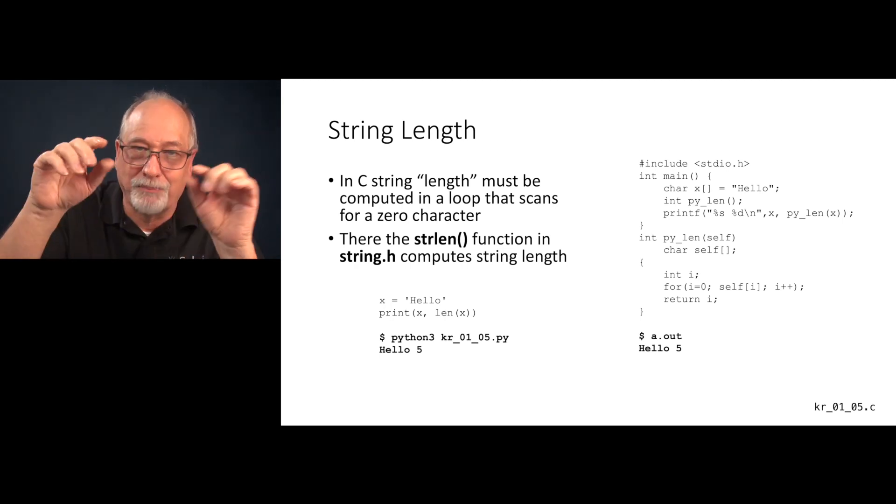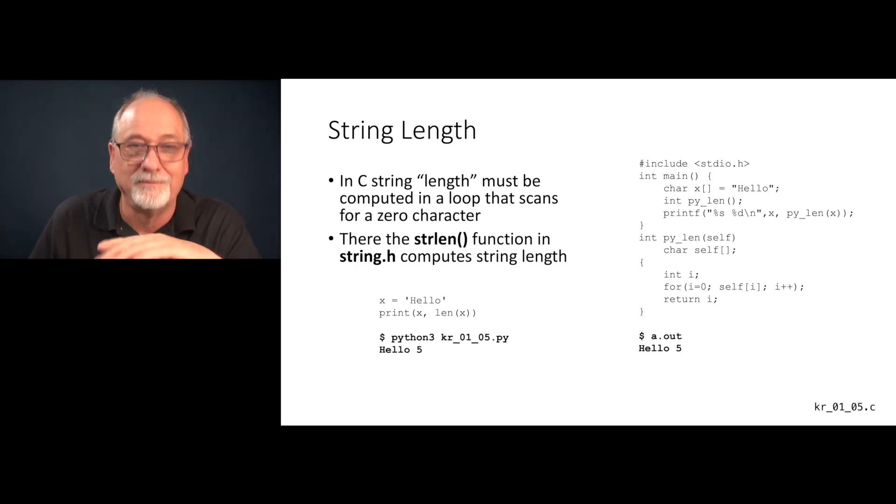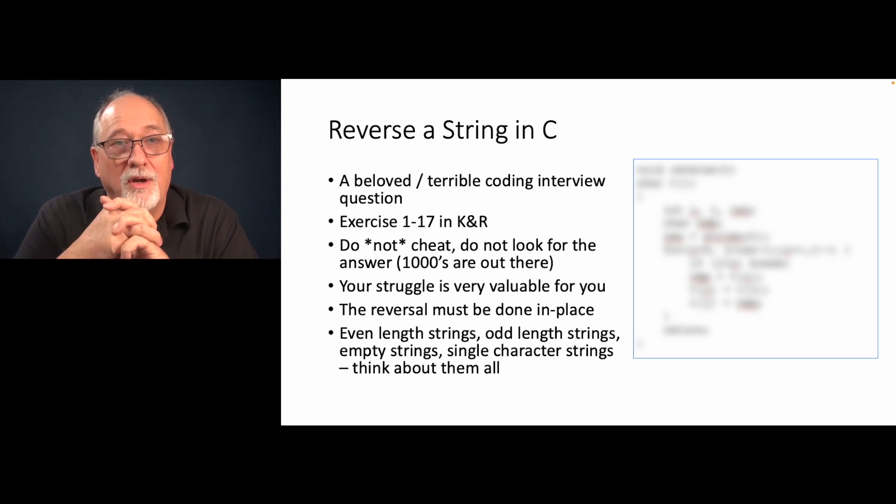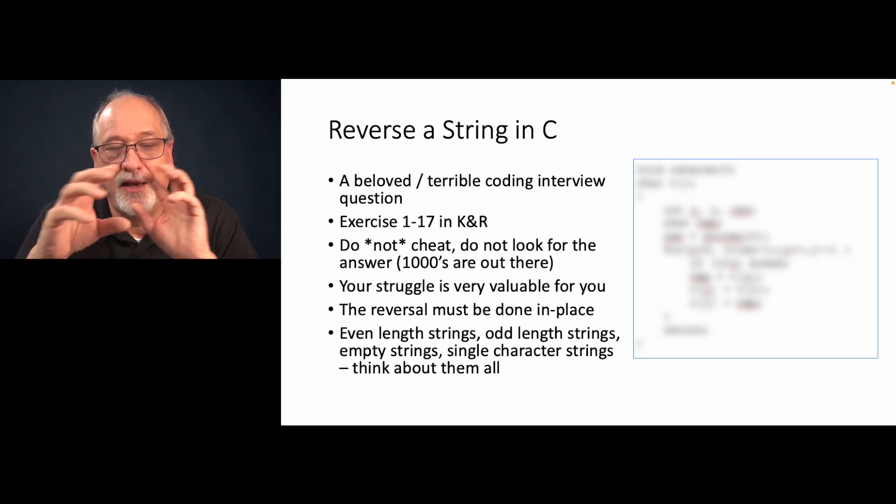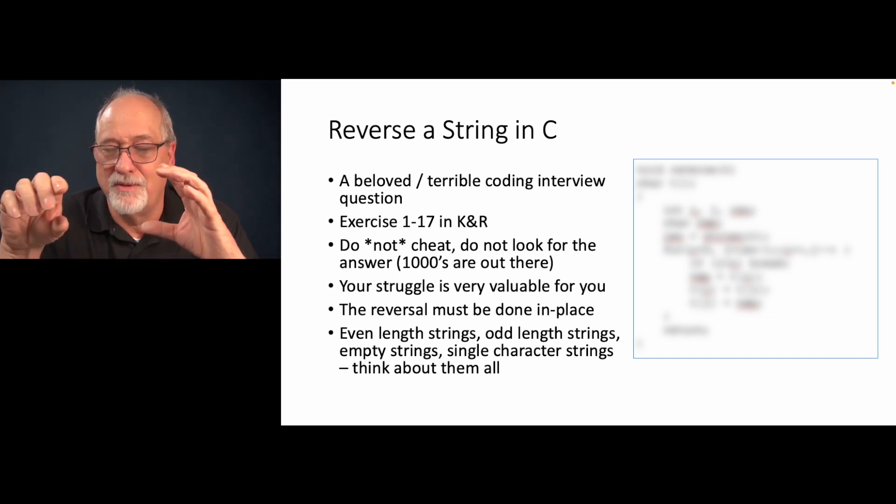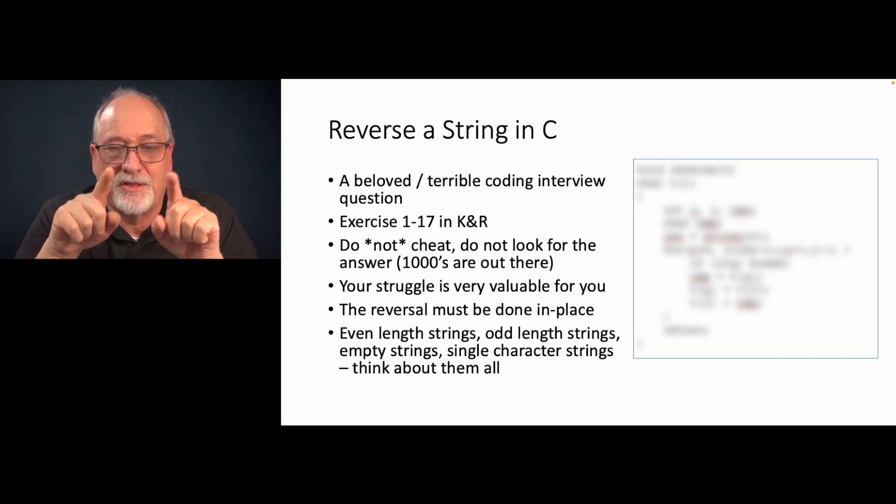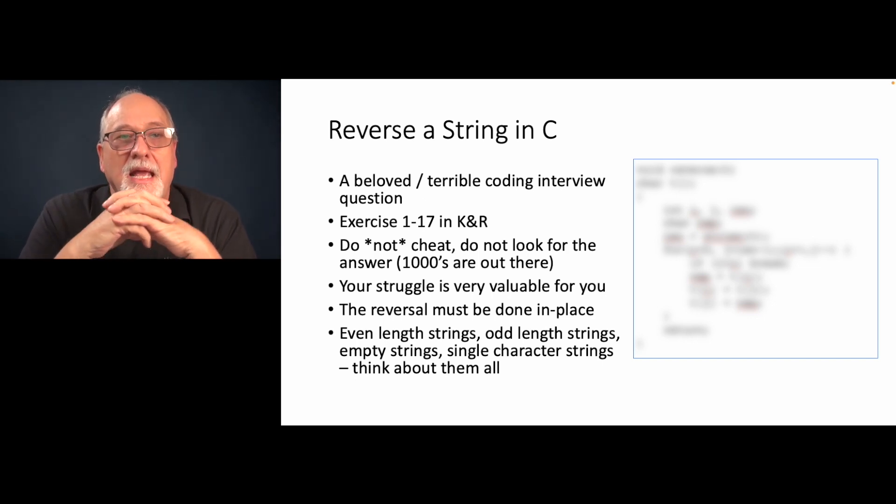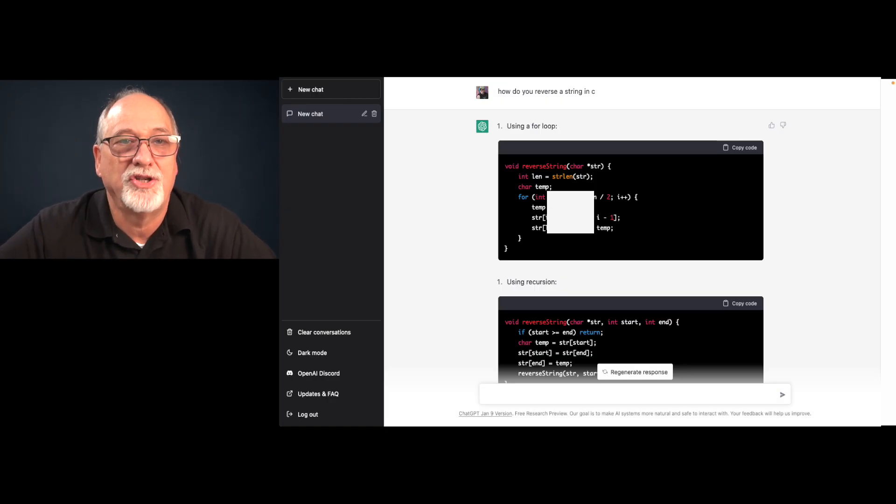Later we'll bring all these things together, much later. One of your assignments, exercise 1-17, is reversing a string in C without requiring any extra string. You can't, you have a string, it's got a certain amount of space, and you've got to just flip, you got to swap the characters. You're going to probably have to draw a picture to do that. It is exercise 1-17 and I'm going to tell you, do not cheat. There are probably a million solutions out there on the internet. Chat GPT will tell you how to do it. Don't be tempted.